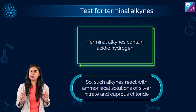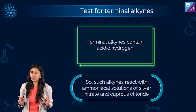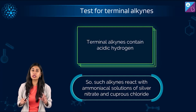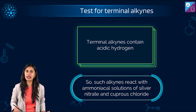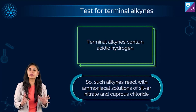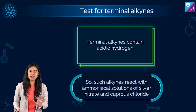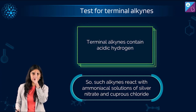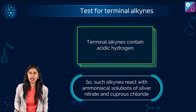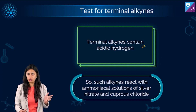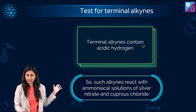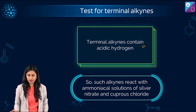The very important aspect to understand here is the test for the terminal alkyne — something that can be asked in one form or the other. What is special about distinguishing tests is that you should be able to detect it with the naked eye. Terminal alkynes contain acidic hydrogen, and such alkynes react with ammoniacal solutions of silver nitrate and cuprous chloride.